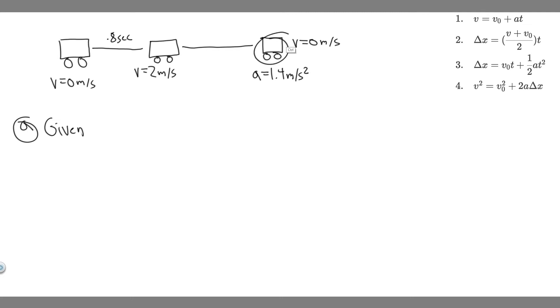So if we say this is the beginning, we know the initial velocity v sub 0 is 0 meters per second. We know the rate at which she's going to be accelerating, 1.4 meters per second squared. And then we know the speed that we're trying to find her to reach. So the final velocity is 2 meters per second.